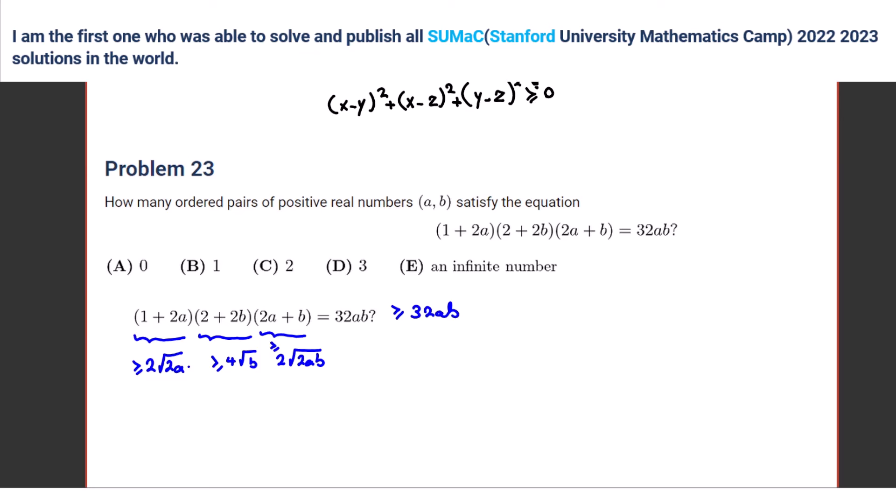So we said equality holds for AM-GM when the terms are equal. Yes. So here we have equality, so because we have equality we can conclude what equals what? 2√(2a) equals (1 + 2a). Yes. What about the next one? (2 + 2b) equals 4√b. Yes.